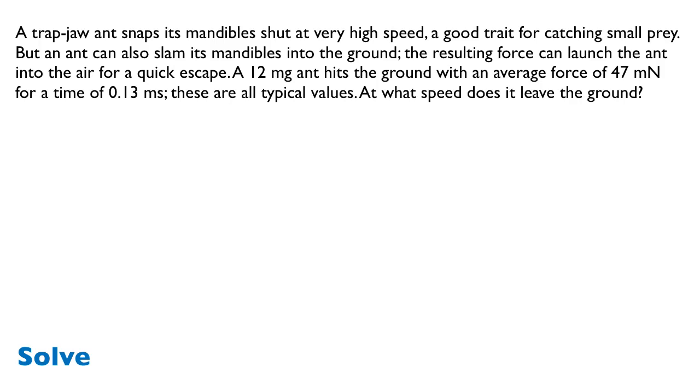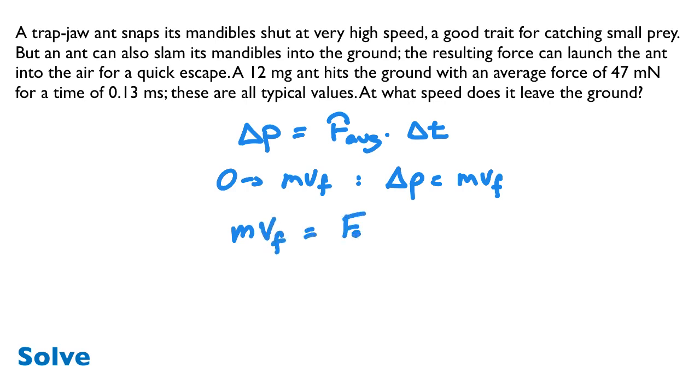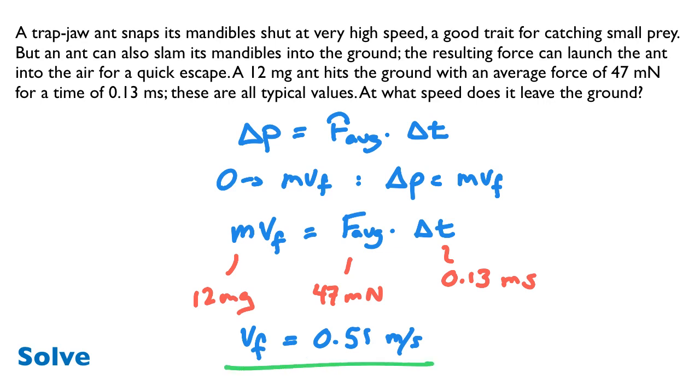With that in hand, we're ready to solve. We're going to use this relationship that says the change in momentum is equal to the average force times the time interval. The change in momentum is just equal to M times Vf. So the mass of the ant times the ant's final speed is equal to the average force times the time interval. In the problem statement, we were given a time interval of 0.13 milliseconds, and the average force of 47 millinewtons. We know the mass of the ant is 12 milligrams. So we have everything to solve for the final speed. If we do that, I get 0.51 meters per second.